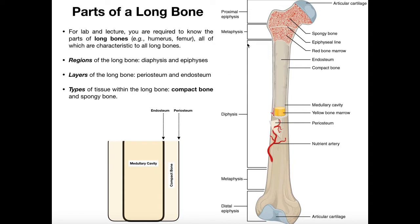The middle part of the long bone, which is the shaft, is called the diaphysis. The diaphysis is hollow — it's not completely empty, but it contains something important called yellow bone marrow, which we'll look at more in a couple of minutes. The diaphysis is the shaft of the long bone and it is hollow.